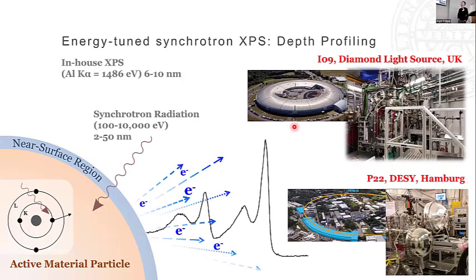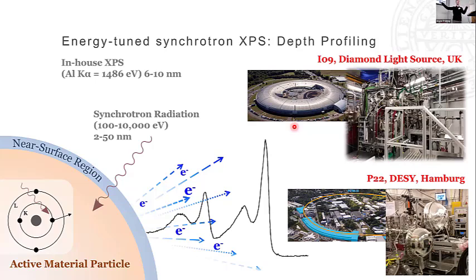It has developed ever since from that. Nowadays we can use several synchrotron beamlines for energy-tuned XPS. People in my group often use I09 at Diamond Light Source and P22 at DESY, both capable of HAXPES. At I09 you can also use the soft X-ray branch of the beamline. With synchrotron radiation we're able to cover a wide range of photon energies to probe a very wide region of the surface and down to what you could consider the bulk — up to 15 nanometers in some cases.